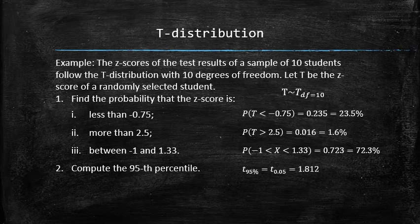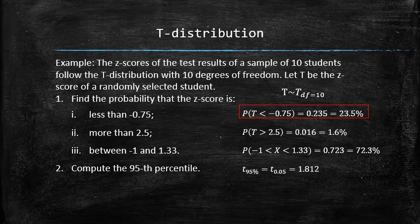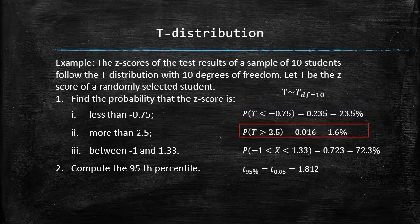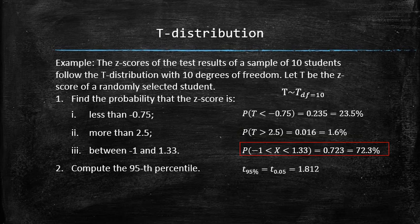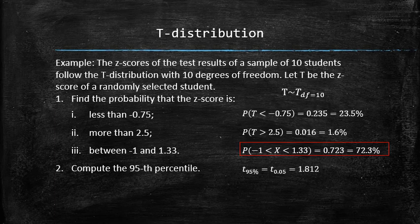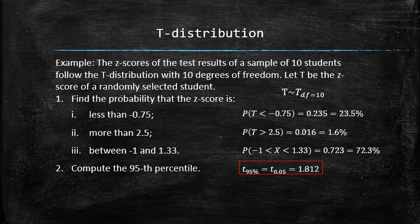Let's interpret the results. There is a 23.5% chance that the z-score of a randomly selected student is less than negative 0.75. There is only 1.6% chance that the z-score of a randomly selected student is greater than 2.5. There is a 72.3% chance that the z-score of a randomly selected student is between negative 1 and 1.33. If your z-score is 1.8, you are better off than 95% of the students in the sample.